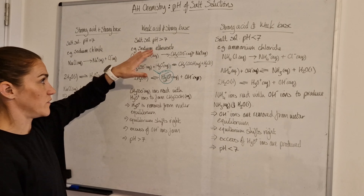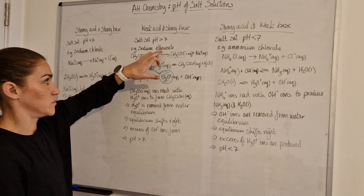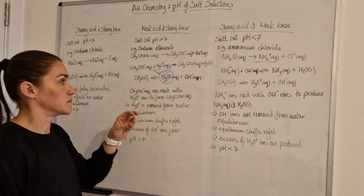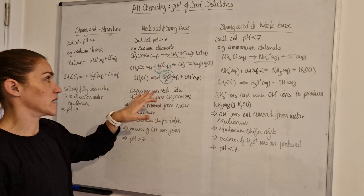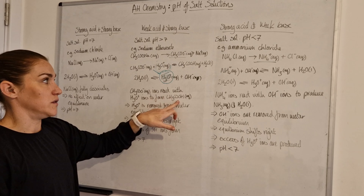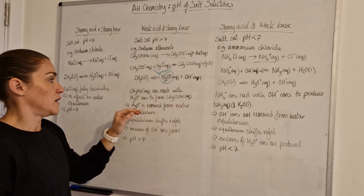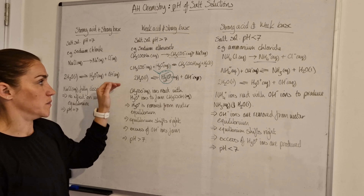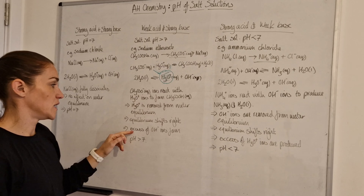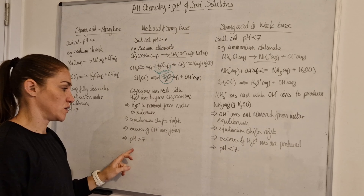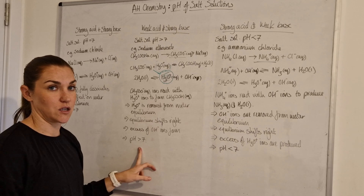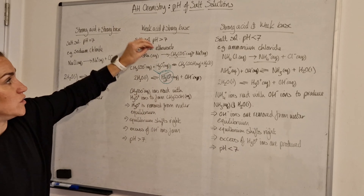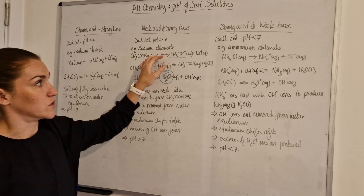To write your answer: whichever ion is associated with the weak acid — ethanoate, propanoate, or methanoate — will react with hydronium ions to form the acid molecule. Hydronium ions are removed from the water equilibrium, so the equilibrium shifts to the right, giving an excess of hydroxide ions, which pushes the pH above seven, making the solution alkaline.